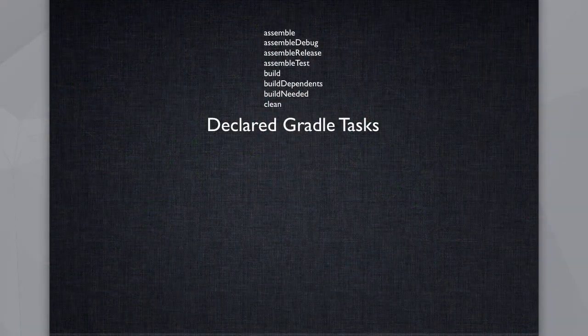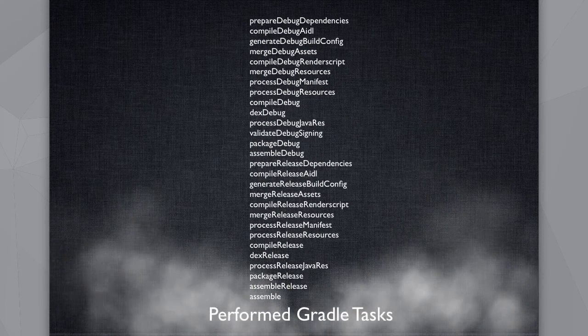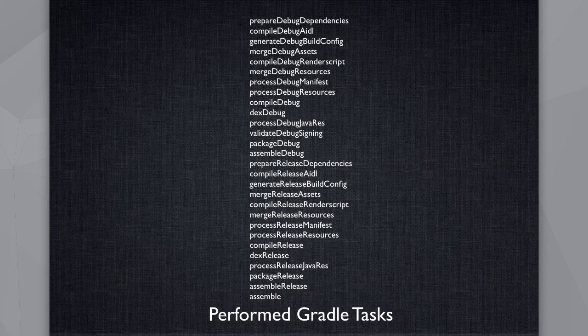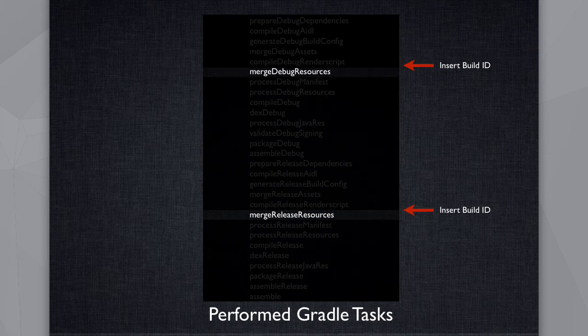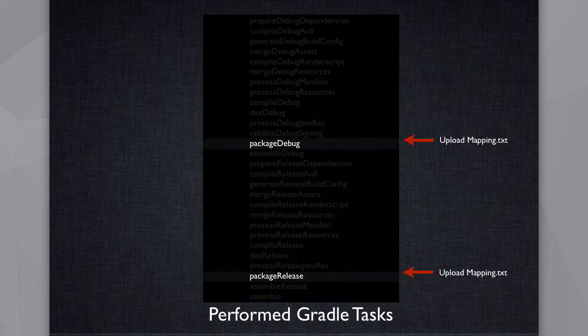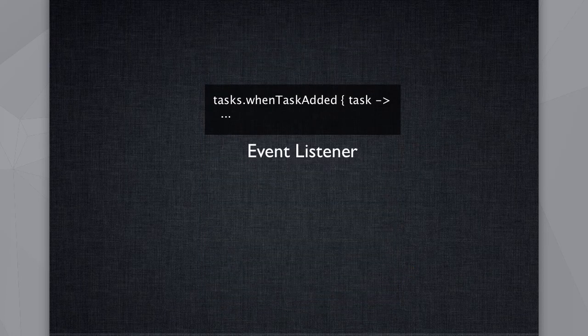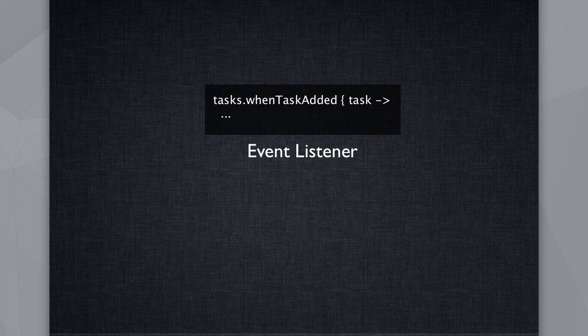Lesson two: use task event listeners. When you type Gradle tasks with the --all flag, you can see all tasks that run during your Gradle project. We wanted our tasks to run before the merge debug and merge release resources step to insert a build ID in your project, and then upload a mapping file after you've packaged. The problem was these tasks didn't exist yet when the Gradle project was being configured and we couldn't add dependencies to them. The solution was to add an event listener — whenever a task is added, you can look at its properties and name, and add new capabilities to it.